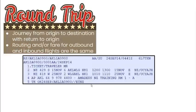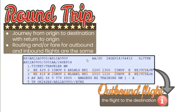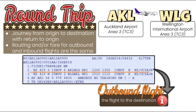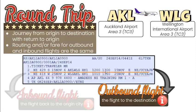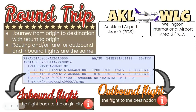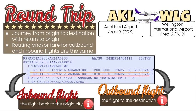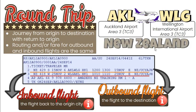This PNR created in Amadeus GDS shows the itinerary of the passenger who will fly out of Auckland Airport on Saturday, November 15, aboard Air New Zealand flight number 429 at 12 p.m. and arrive at Wellington International Airport at 1 p.m. He will return using the same airline with flight number 418 on Tuesday, November 25 at 10:10 a.m., and is expected to arrive at the original city at 11:10 a.m. Both flights leave and arrive at airports in the same country — in this example, New Zealand.